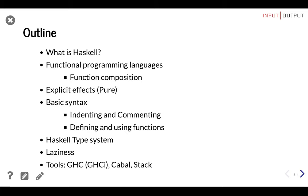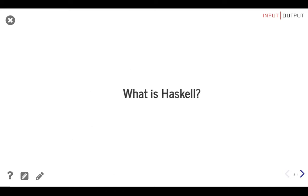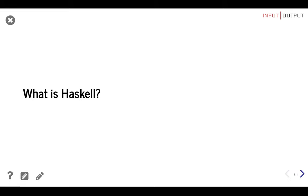We're ready for the introduction to Haskell. The outline covers: functional programming, explicit effects, some basic syntax, the Haskell type system, and we'll finish by explaining why it's not always bad to be lazy. At the end I will name a few common tools but only explain GHC. So, what is Haskell? We'll go over each property of Haskell individually and answer this question at the end of the lecture.